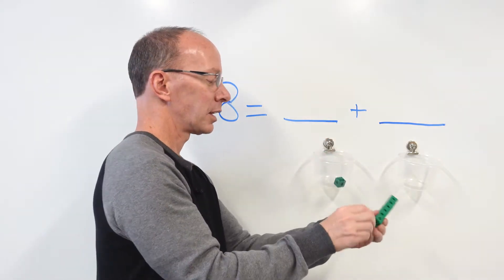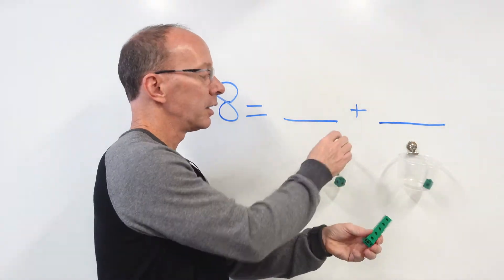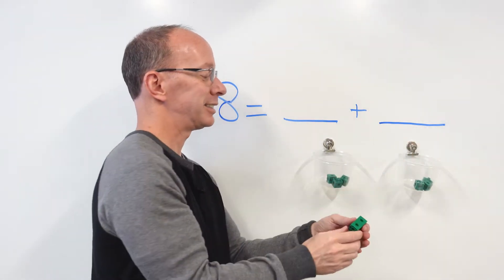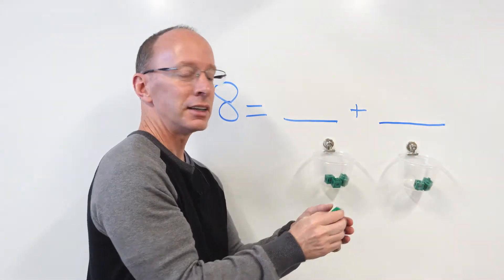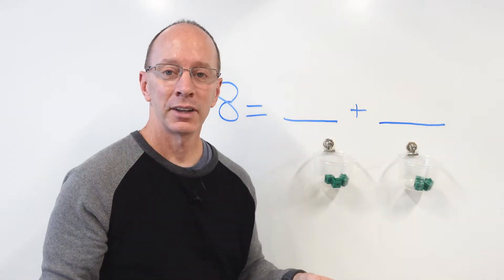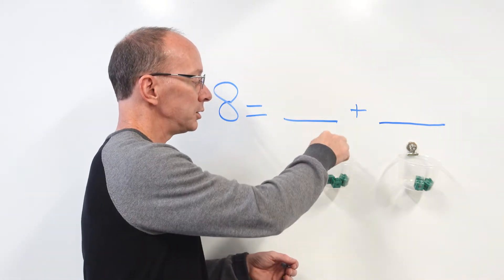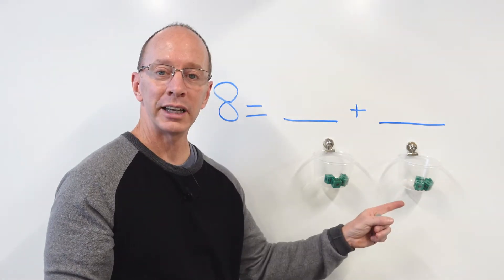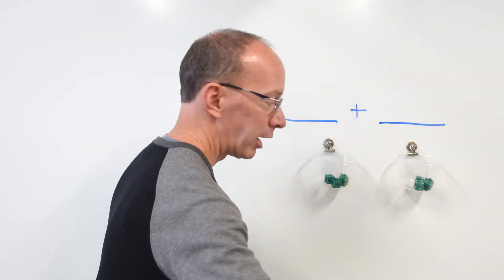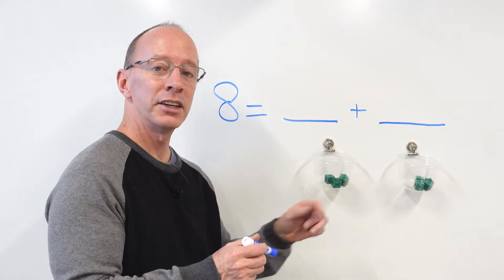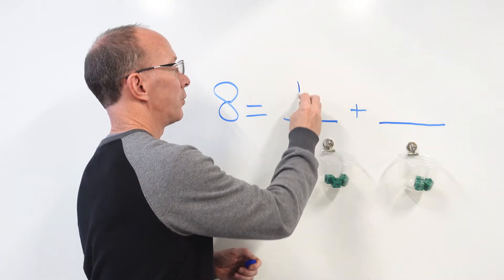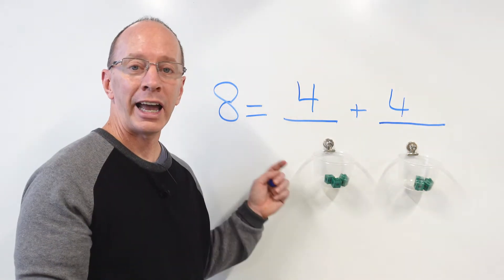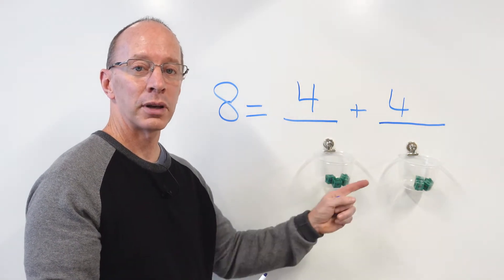And while I'm doing that, you need to count out each of these blocks. So I have one, two, three, four, five, six, seven, eight. So I have four cubes in this cup and four cubes in this cup. So now I'm going to write the number right above here. I'm going to put four right here and four right here. So eight equals four plus four — two equal groups.